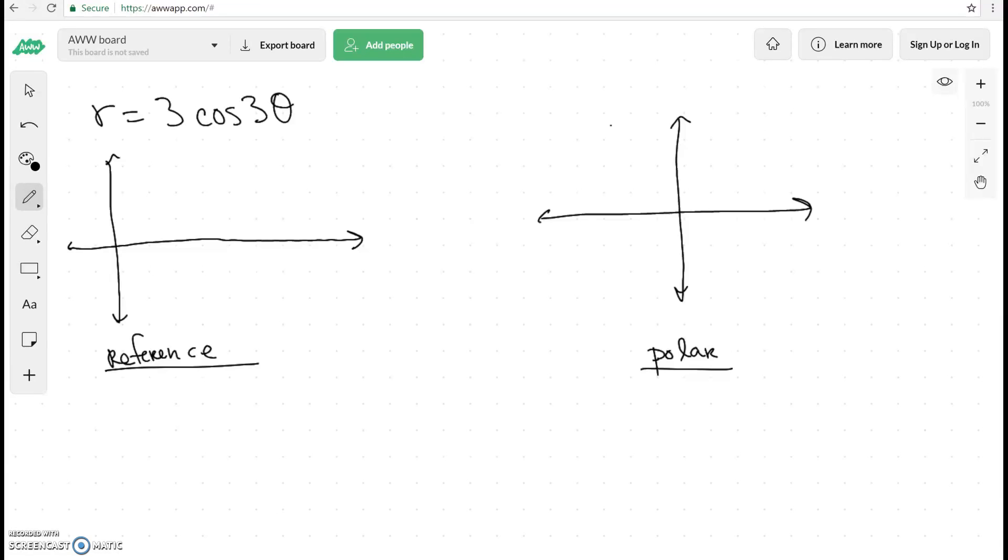Okay, let's try this other graph. So this is going to be r equals 3 cosine 3 theta. Now this one's a little bit different and it can be a little bit difficult to draw, but this is what we're going to call the rose curve.